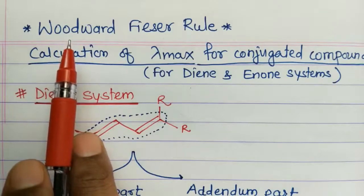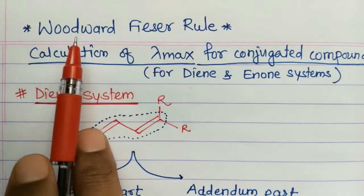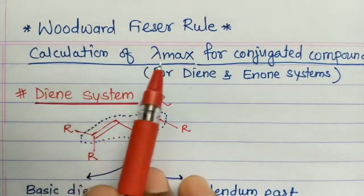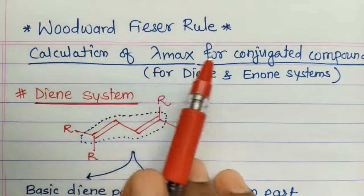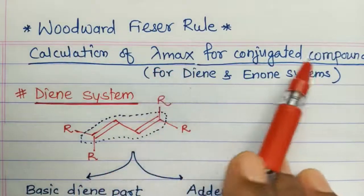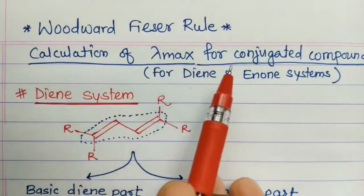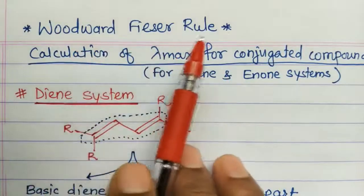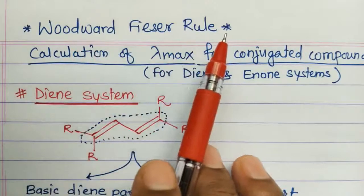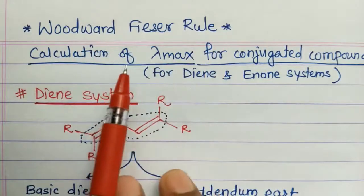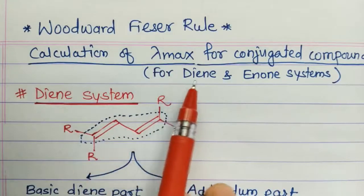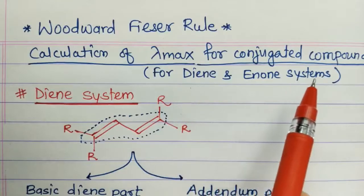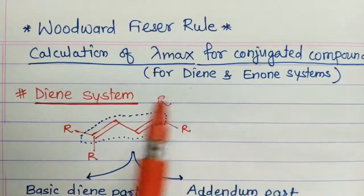Woodward and Fieser both worked on the calculation of lambda max values of conjugated systems like dienes and enone systems, which is why the rule is named the Woodward-Fieser rule. Today we are going to see the calculation of lambda max for only the diene system; enone systems will be covered later.